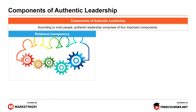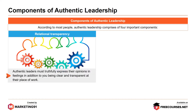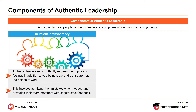Next is relational transparency. Authentic leaders must truthfully express their opinions and feelings, in addition to being clear and transparent at their place of work. This involves admitting their mistakes when needed and providing their team members with constructive feedback.